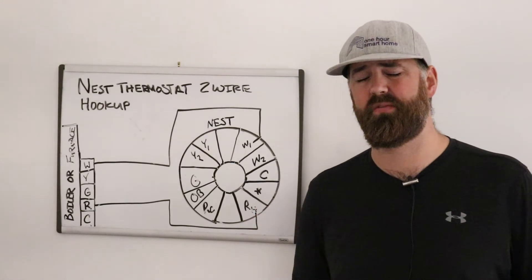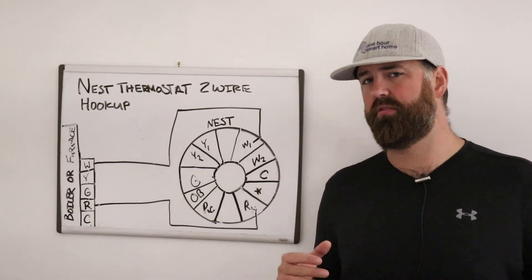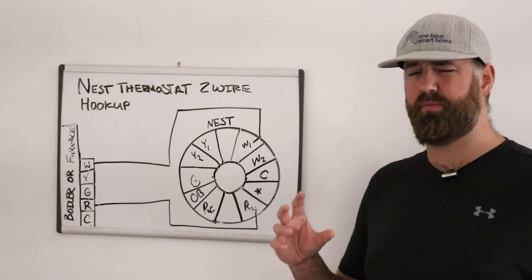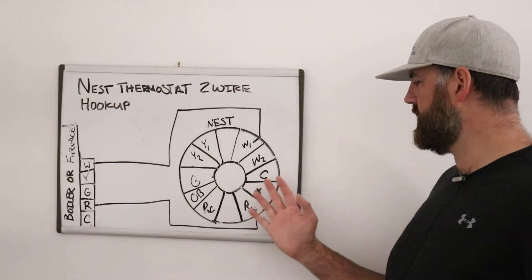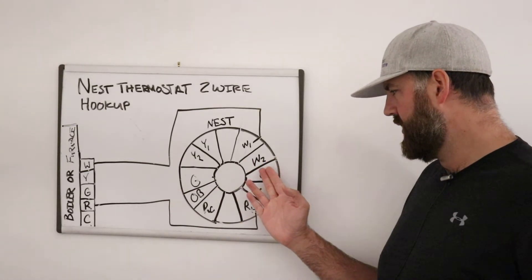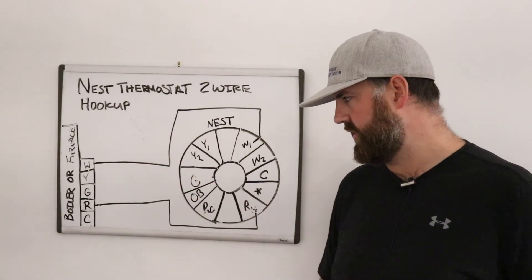Star terminal, that is for a humidifier or dehumidifier. It allows you to connect one of those and control it with the nest. The C wire is a common wire that is basically what is effectively a neutral wire. It allows your nest to charge 100% of the time through the C wire without needing to go through one of these other current paths.